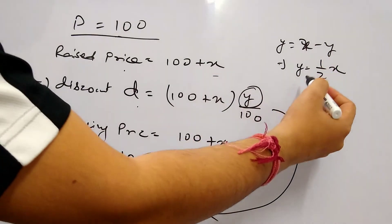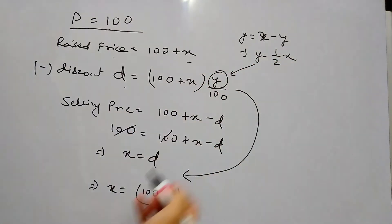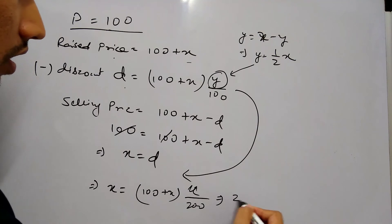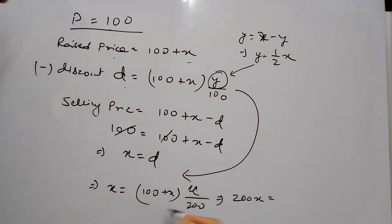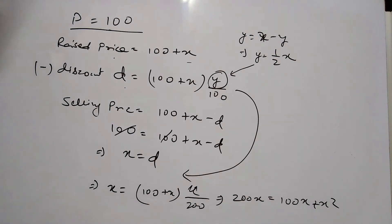So if we put this Y here and compare this, then we have X equals to 100 plus X, and Y is equal to X by 2, so it is X by 200. So 200X equals to 100X plus X squared.